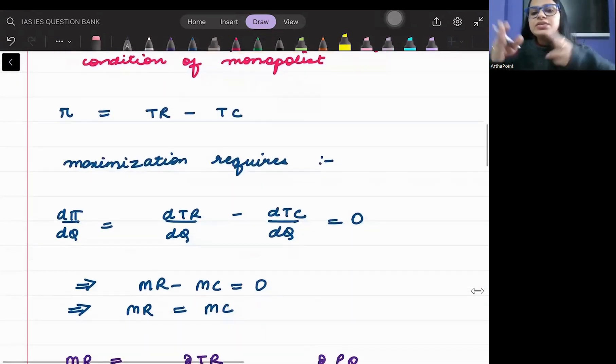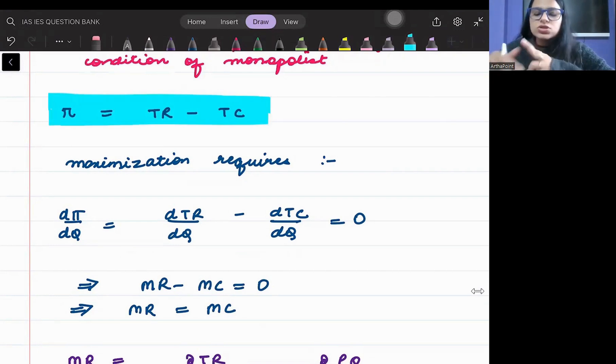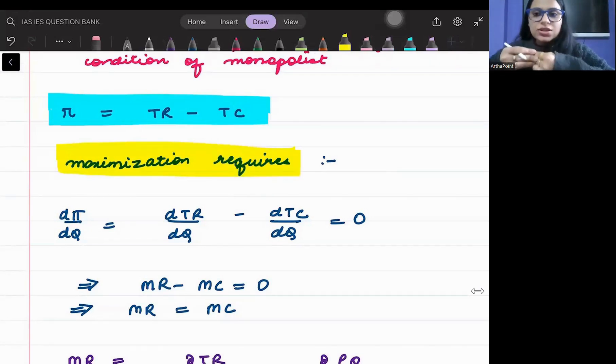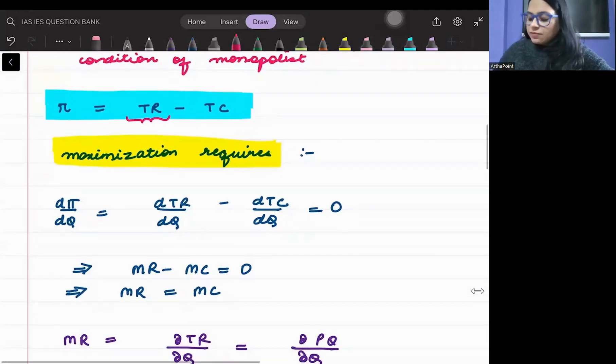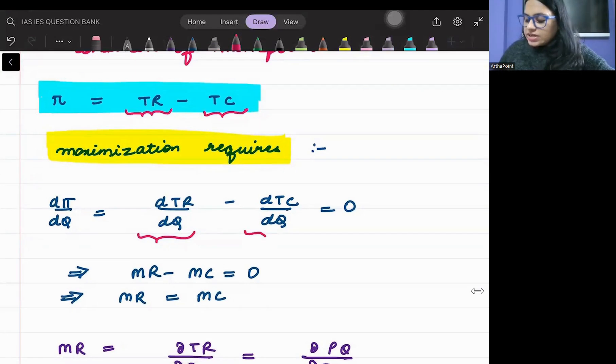Then we will write the profit maximizing condition of a monopolist. What is the profit maximizing condition? Pi equals TR minus TC. Profit is total revenue minus total cost. Now the maximization requires that we will differentiate the profit and equate it to zero. When we differentiated TR, we got dTR by dQ. And when we differentiated TC, we got dTC by dQ, and we equated it to zero. This is the first order condition of profit maximization.